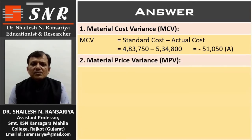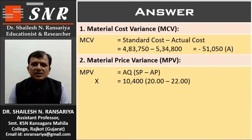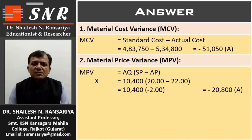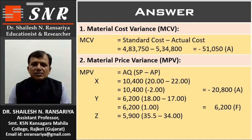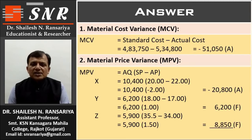Second, Material Price Variance. MPV = AQ × (SP − AP). For X: AQ 10,400 × (20 − 22) = 10,400 × (−2) = −20,800. For Y: 6,200 × (18 − 17) = 6,200 × 1 = 6,200 favorable. For Z: 5,900 × (35.5 − 34) = 5,900 × 1.5 = 8,850 favorable. Total Material Price Variance: −5,750 adverse.